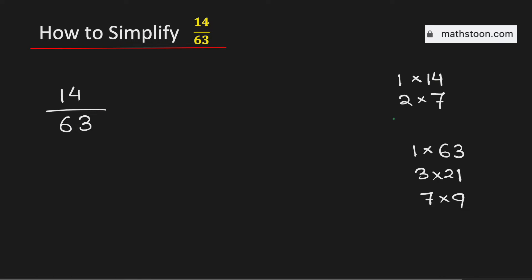See that the common divisors are 1 and 7. Therefore, among the common divisors, 7 is the greatest one. That means the greatest common factor of 14 and 63 is 7.